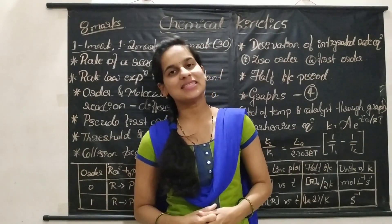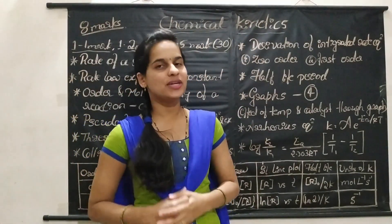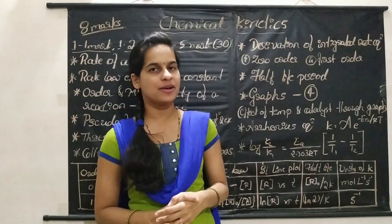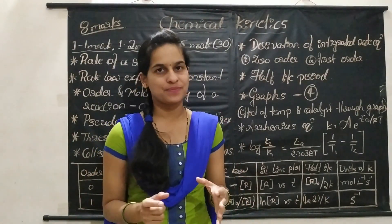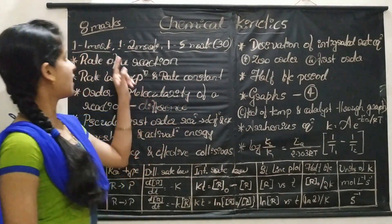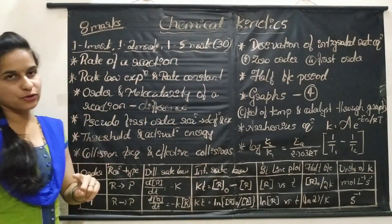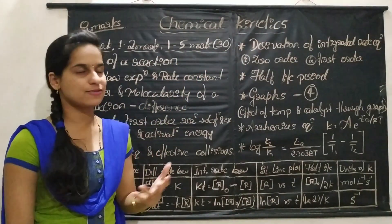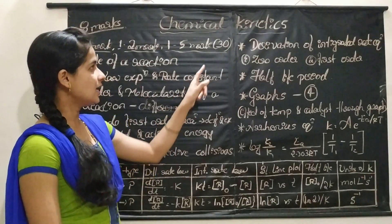Let us consider today's topic: Chemical Kinetics. It is the fourth chapter in the Class 12 syllabus and the easiest chapter in your syllabus. This chapter carries totally 8 marks — one 1-mark question, one 2-mark question, and one 5-mark question will be asked from the Chemical Kinetics chapter.